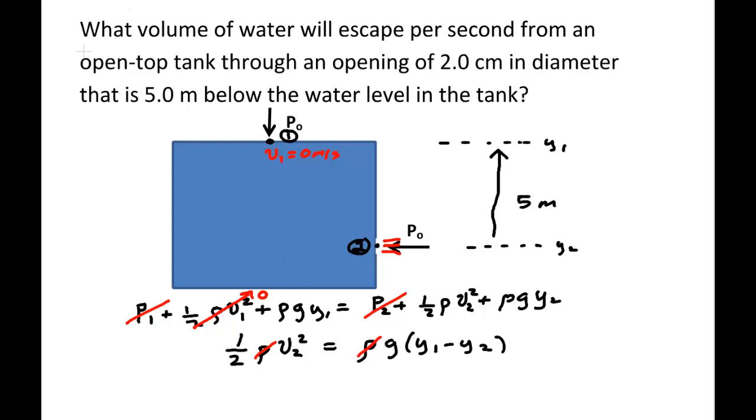And we can solve for V. And if we do that, the speed exiting this is simply the square root of 2G Y1 minus Y2. That's just the square root of 2GH. The same answer you get for a falling body.